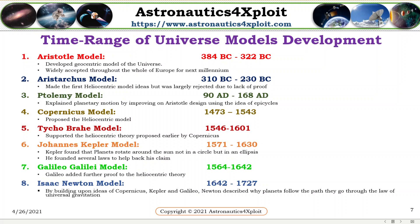Copernicus model: Copernicus proposed the heliocentric model. Tycho Brahe model: Tycho Brahe supported the heliocentric theory proposed earlier by Copernicus. John Kepler model: Kepler found that planets rotate around the sun, not in a circle, but in an ellipse. He found several laws in order to back his claim.